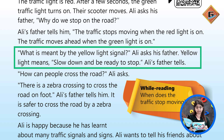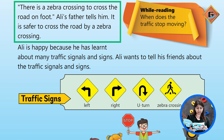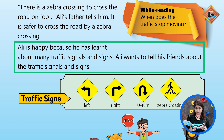Yellow light means slow down and be ready to stop, Ali's father tells him. How can people cross the road? Ali asks. There is a zebra crossing to cross the road on foot, Ali's father tells him. It is safer to cross the road by a zebra crossing. Ali is happy because he has learnt about many traffic signals and signs. Ali wants to tell his friends about the traffic signals and signs.